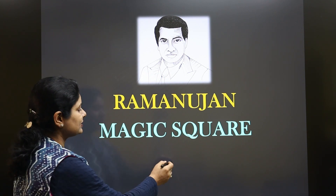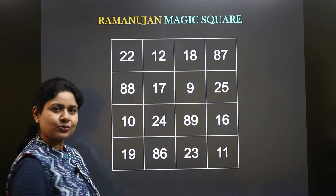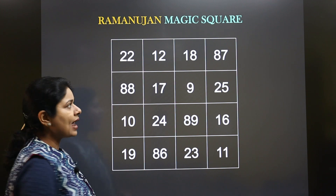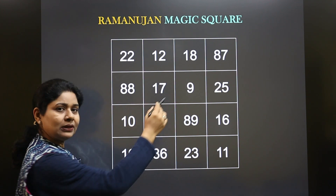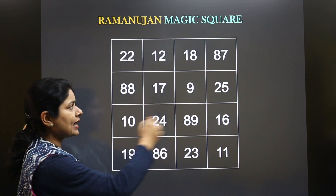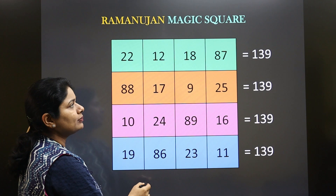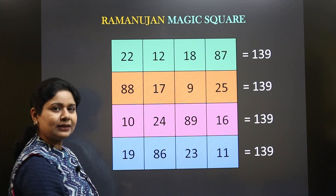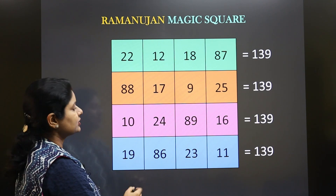For example, this is a magic square and if you add up all the numbers in any of the rows, the total will be 139 for this particular magic square.